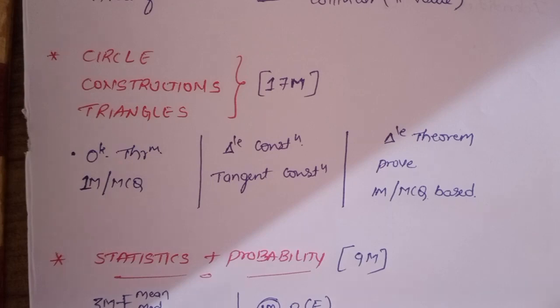In constructions, triangle construction and tangent construction are there. Major questions are there. Triangle construction is three marks, tangent construction is two marks. Next triangles - one theorem is compulsory to prove. One question, multiple choice based on BPT theorem or area of similar triangles, one mark multiple choice question.